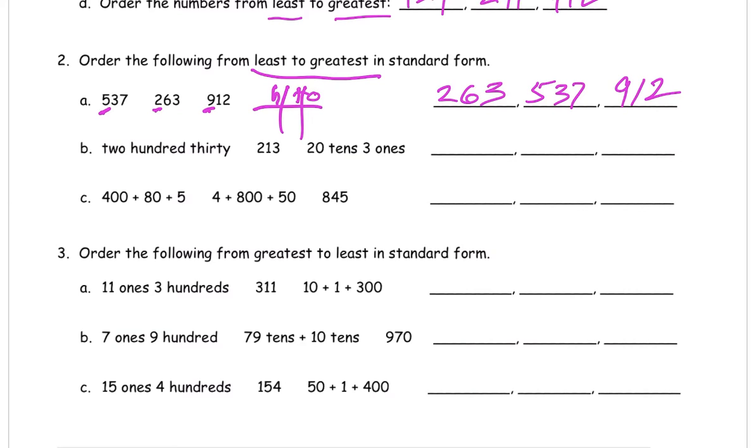And now these were already in standard form, but this one's for B, these aren't. So I'm gonna write them in standard form. If they're not just so it's easier to look at and I know what number I'm talking about. So 230, that's not 13, it's 230. So it's 230. And then 20 tens, 3, 1. 20 tens is 200. 20 tens and 3 ones is 203. So that's 203.